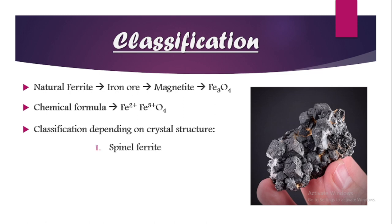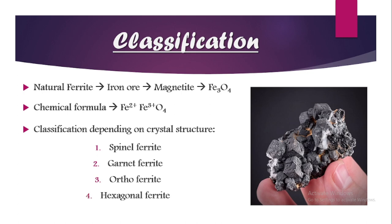There are mainly four types based on crystal structure. The first one is spinel ferrite, the second is garnet, the third is ortho ferrite, and finally we have hexagonal ferrite. Now let us see each one in detail.